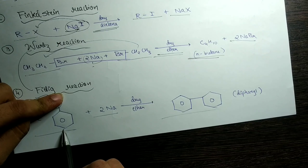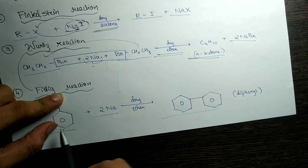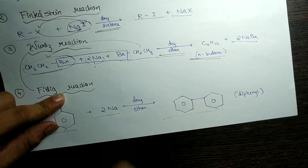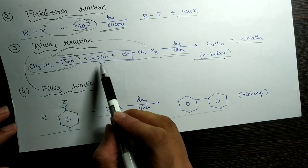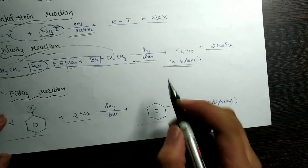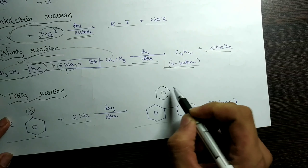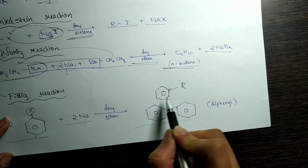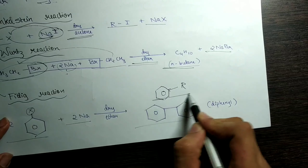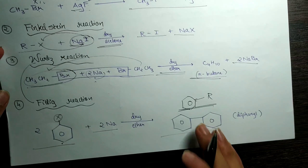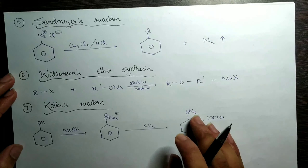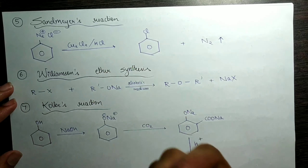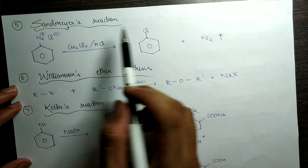The next one is the Wurtz reaction. This can be asked for one or two marks and is pretty important. We take two moles of an alkyl halide, that is haloalkane, and make it react with sodium in the presence of dry ether. Remember: sodium in the presence of dry ether. You will get two moles of NaBr, and whatever is left you join — there are four carbons and no double or triple bonds, so it is an alkane, called n-butane since it is a straight chain.